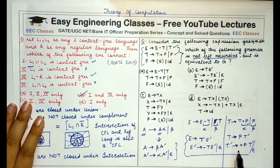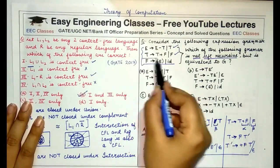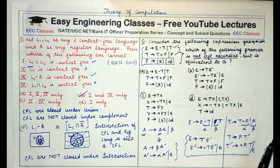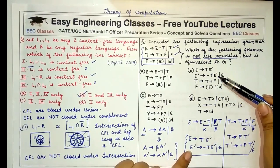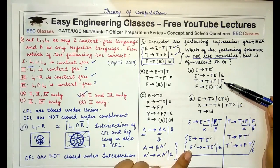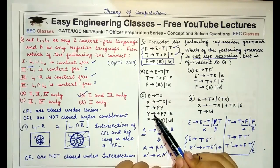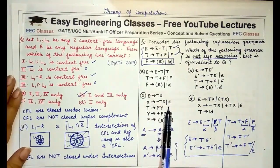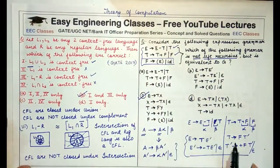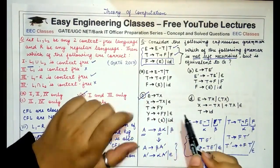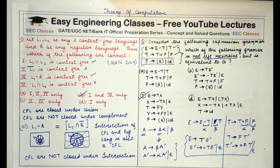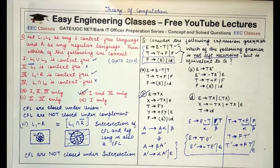Along with these four productions, we add the third production to get the resultant grammar which is not left-recursive but is equivalent to the given grammar. Checking the options, option C is the correct answer. Note that in option C, E-dash has been replaced with X and T-dash with Y — this does not make the answer incorrect since any non-terminal name may be used, as long as the conversion results in a correct non-left-recursive grammar.